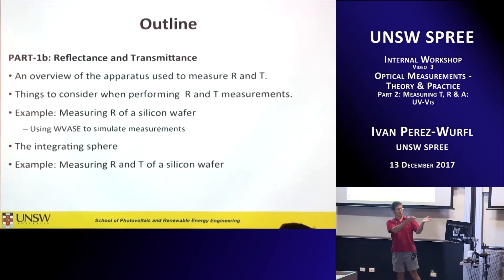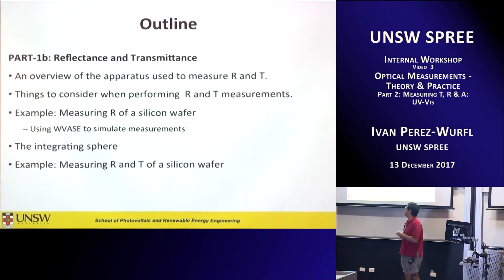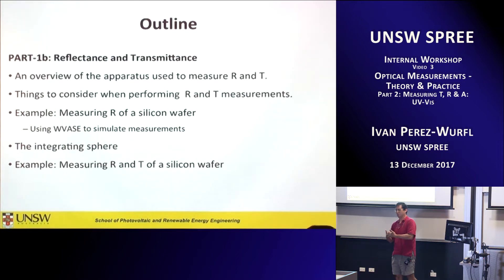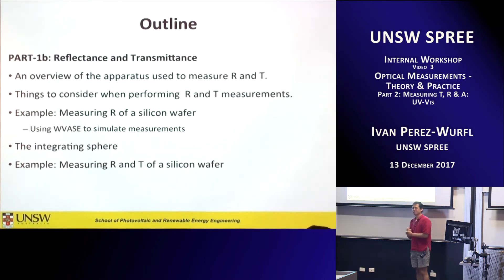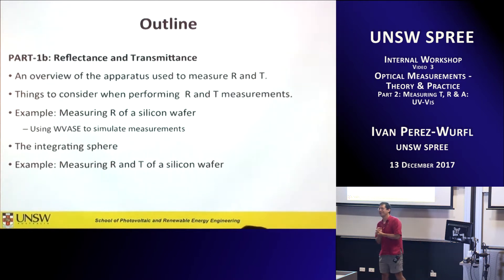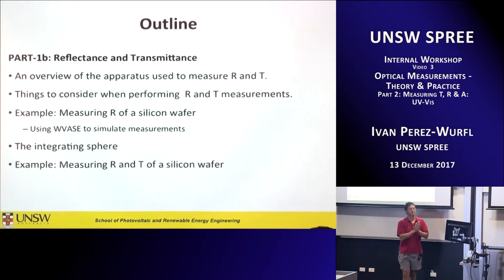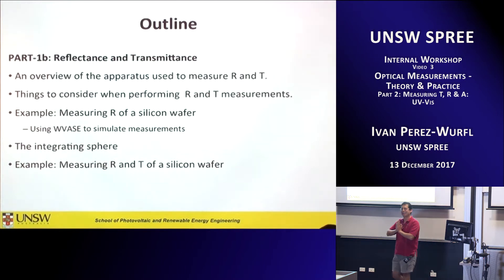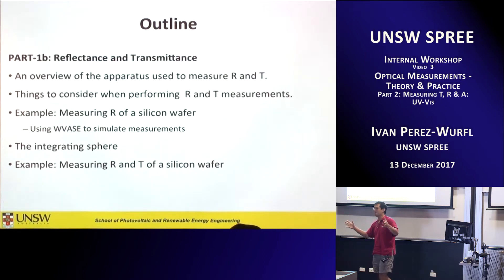I'll give you a couple of examples — just measuring the reflectance of a silicon wafer — and you'll see there are many unexpected results if you don't think about what really happens. Because as much as we understand reflection and transmission, we only understand it in our perception, which is 400 to 700 nanometers. Something that is dark, opaque, or reflective to you may not be so across the whole measurement range.